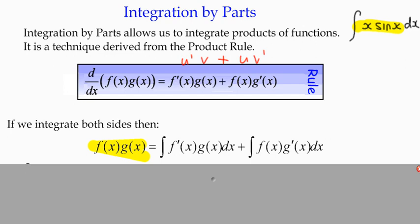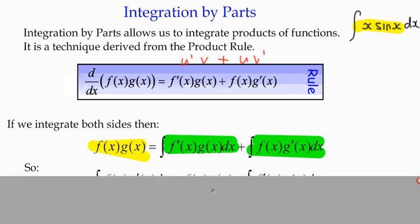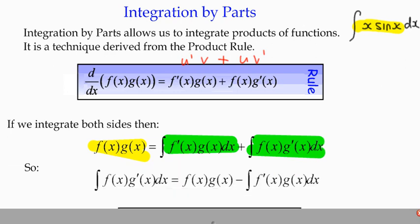The first term is the integral of f dash x times g of x, and the second integral is f of x, g dash x. And all we're going to do just now is rearrange it just so that one of those terms on the right-hand side is the subject of this particular formula. We're going to take the last term, the integral of f of x, g dash x with respect to x, and we've got the other two terms now forming a difference equation here.